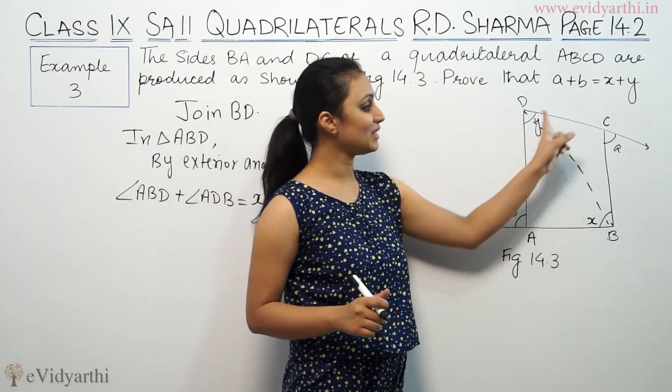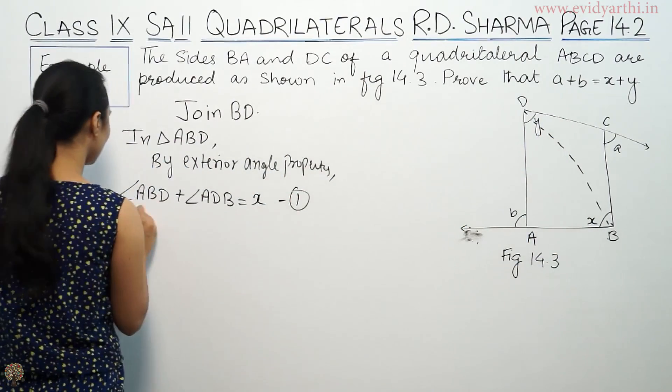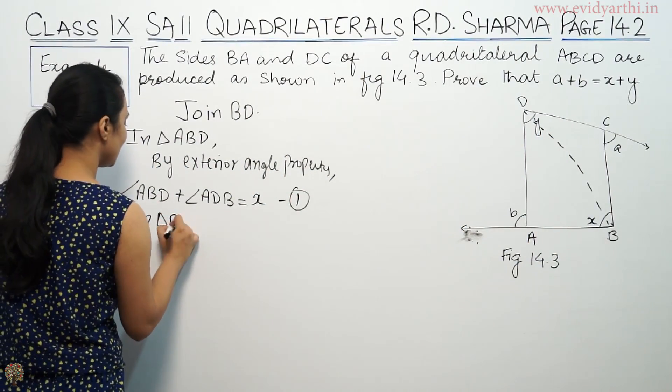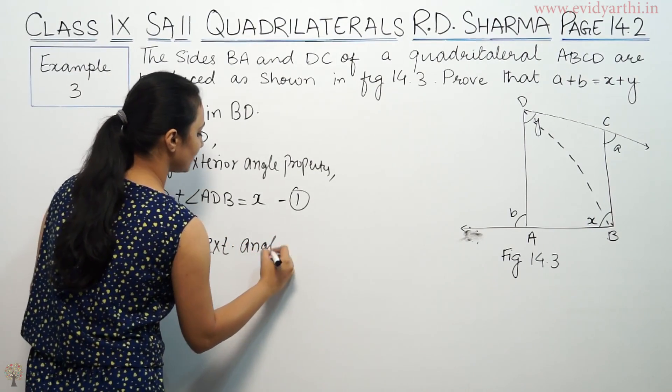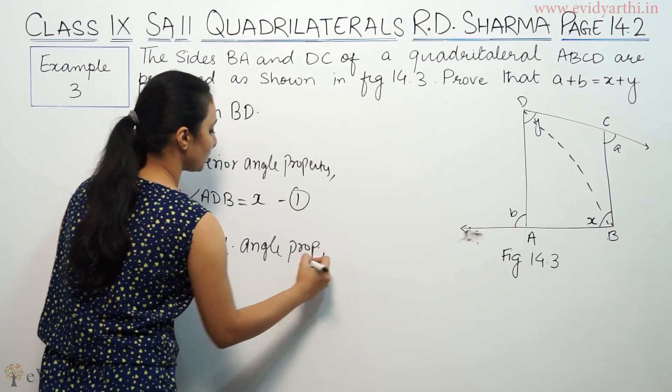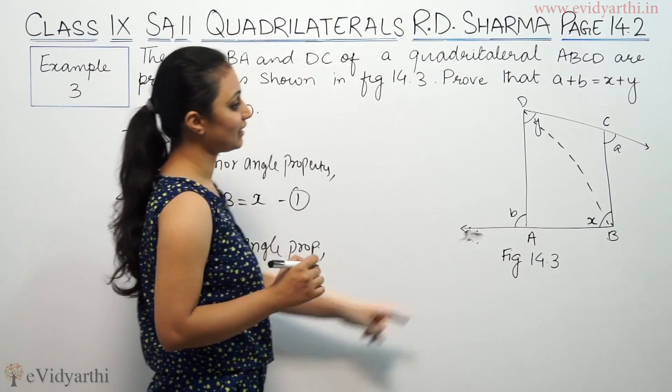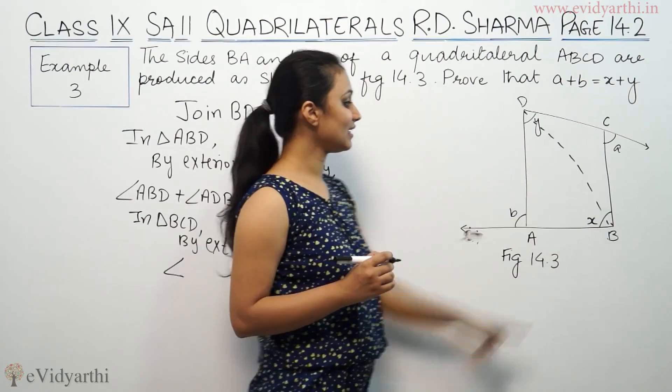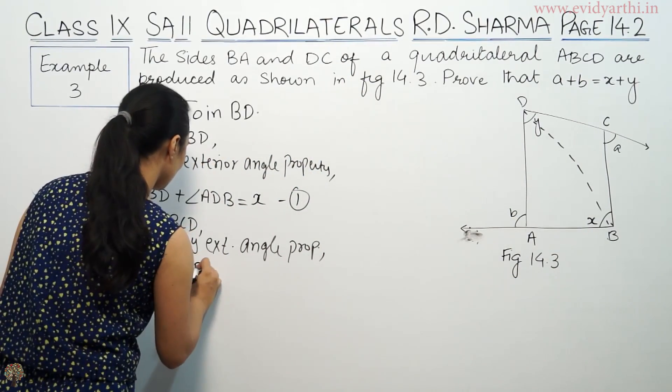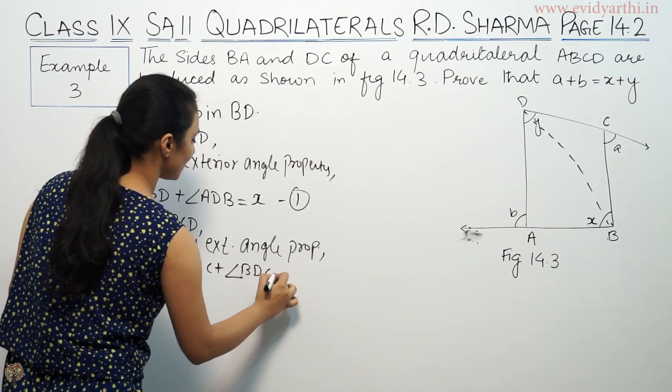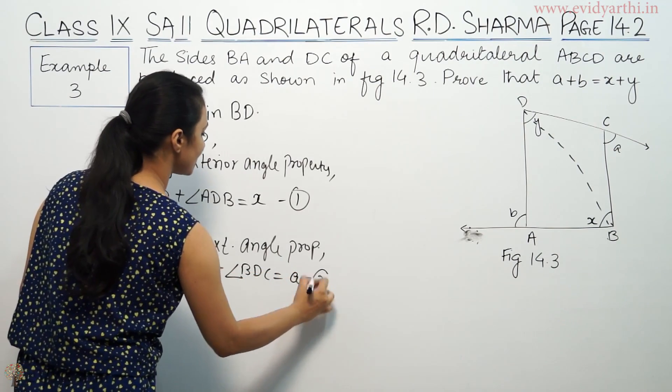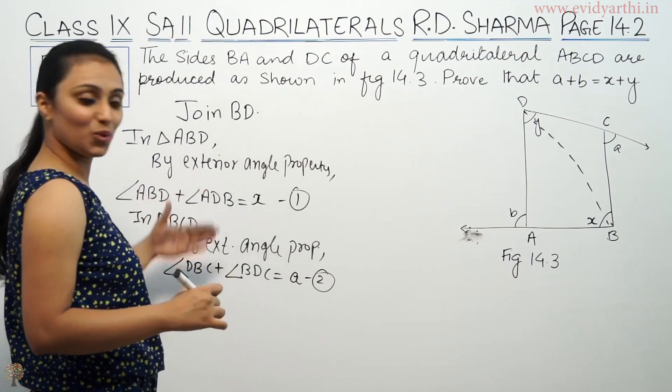In triangle BCD, by exterior angle property, angle BDC plus angle DBC is equal to Y. This is second equation. So we will add both sides.